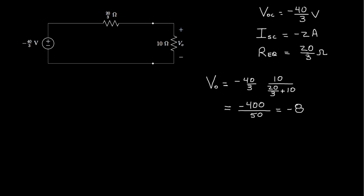That's an example of using the Thevenin equivalent circuit to solve for an output voltage. We've shown two ways to determine the Thevenin equivalent resistance: one is to find the open circuit voltage and short circuit current and take their ratio; the other is to set the independent sources to zero and apply a known test source to find the equivalent resistance directly. Both methods are valid, and which one you use is a matter of preference and simplicity for the particular circuit.